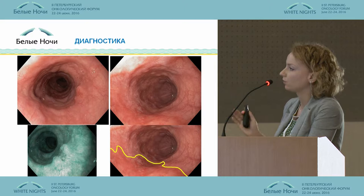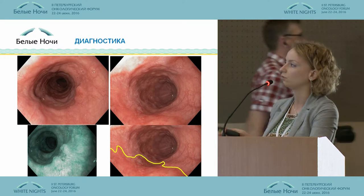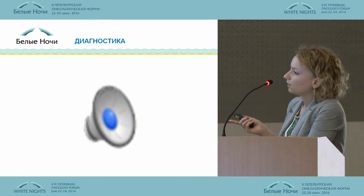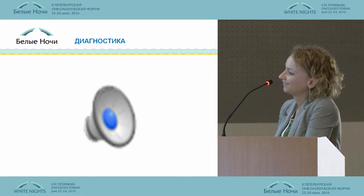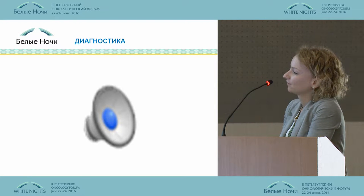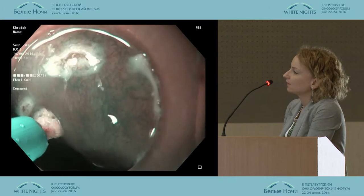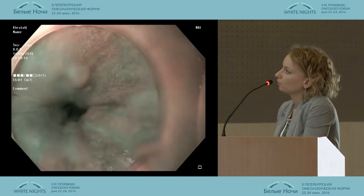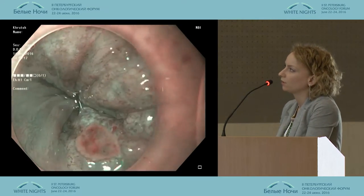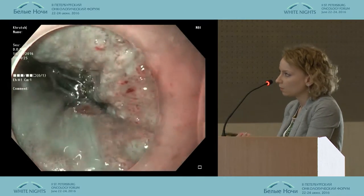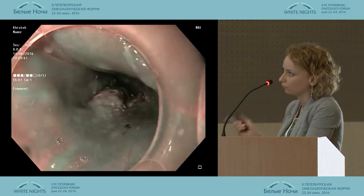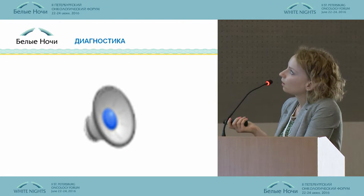I see an endoscopic image. You can see the demarcation line, the outline of it, and specialists can see both the microvascular picture. This is our latest patient. She was treated for reflux in the local outpatient clinic. Only a year later, the endoscopist took a sample and found adenocarcinoma.